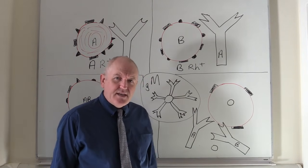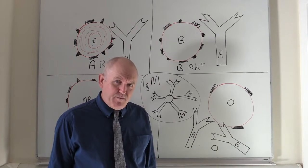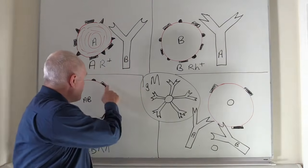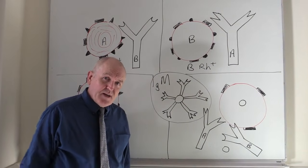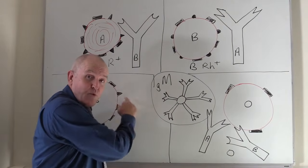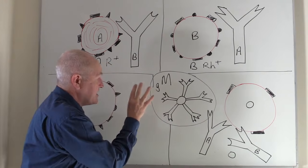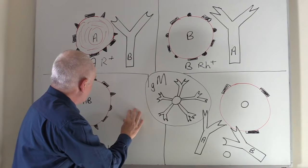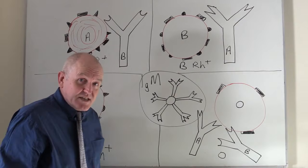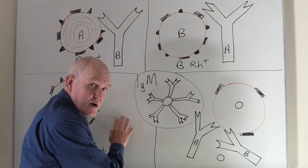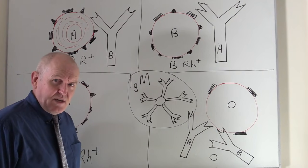In the ABO system there are naturally occurring antibodies in the plasma. With the Rhesus factor, however, there are no naturally occurring antibodies. So if someone is Rhesus negative, there will be no Rhesus factor antibodies — no Rhesus factor immunoglobulins — in the plasma. Whether someone is Rhesus positive or Rhesus negative makes no difference; there still will be no Rhesus factor antibodies in the plasma. They are not naturally occurring.